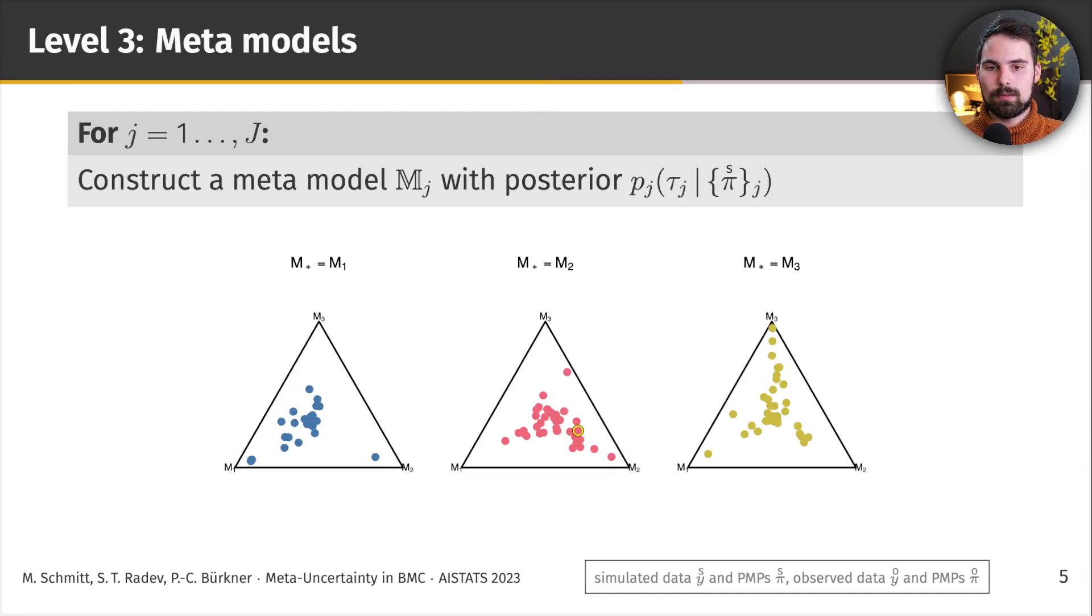So, now we take it one step further, and treat this distribution of posterior model probabilities as data, and construct a Bayesian model on this distribution of posterior model probabilities. So, we now only need to pick a distribution that's suitable to fit data in a probability simplex. One such distribution might be Dirichlet distribution, but in here, because we want a distribution that's a bit more flexible, we choose a logistic normal distribution. So, for each of those triangles, if you will, we fit one Bayesian model.